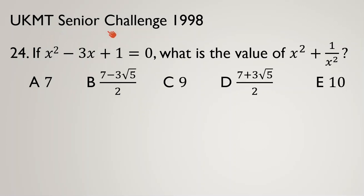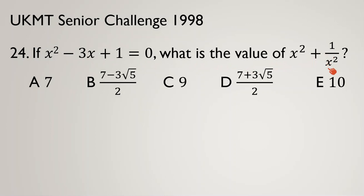UKMT Senior Challenge 1998, Problem number 24. If x squared minus 3x plus 1 equals 0, what is the value of x squared plus 1 over x squared? The choices are the following.